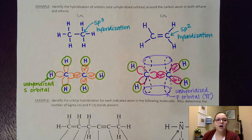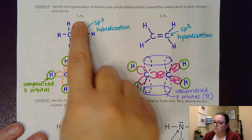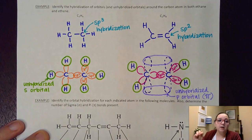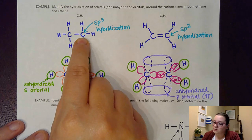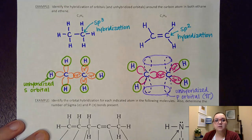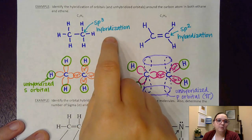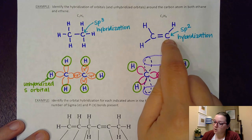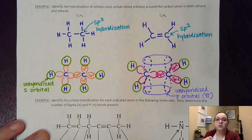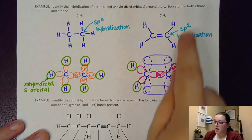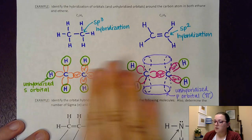So let me explain what I drew here. It says: identify the hybridization of orbitals and unhybridized orbitals around the carbon atom in both ethane and ethene, and they gave us our formulas for ethane and ethene. What I did first is I drew my ethane out and my ethene out, counting up all my Lewis dots and putting my carbons in the central position, putting my hydrogens around that. So then let's say I wanted to figure out the hybridization around one of these carbons. I look and see there are four electron domains around that carbon. Four orbitals means I have to blend together an S, a P, a P, and a P — so that would be SP3 hybridization. However, on the ethene, I only have three electron domains. Remember, a double bond still counts as one domain. So that means I need to blend together three orbitals — an S, a P, and a P — so that would be SP2 hybridization.